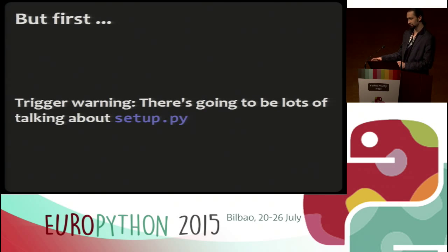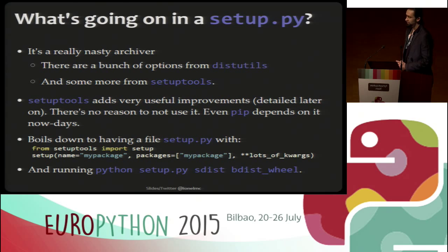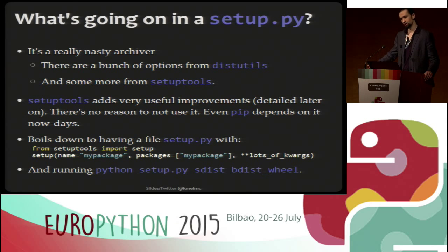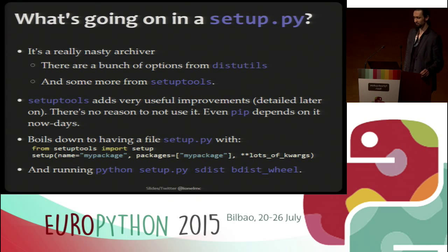I'm going to go through the content. At the beginning there's some introductory stuff — I'll go fast through that. If you have questions, just wave, yell, or ask right away. Don't wait until the end. The first thing about setup.py: it's basically a configuration for a very complicated archiver — an archiving system that also does compilation and weird things. There are lots of options from distutils, and then setuptools adds more on top. Setuptools is quite an improvement; you should use it because nowadays everyone does, even pip depends on it. Don't do raw distutils, because you're going to have a bad time.